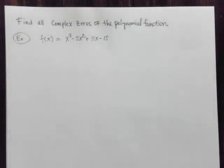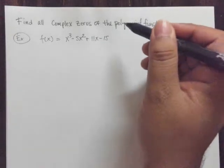So what I want to do first is try to find all the possible rational zeros. Maybe there's a rational zero that comes into play here. So let's take a look.